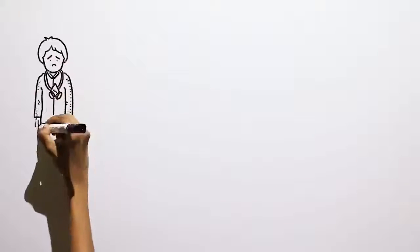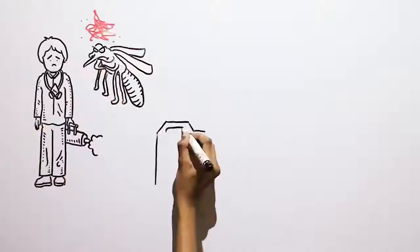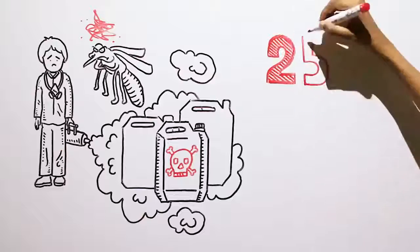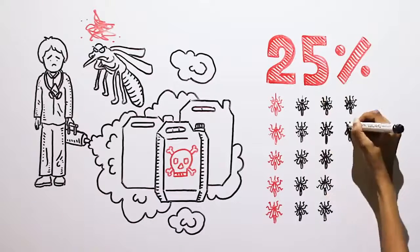Chemical fogging has been done so much in the Maldives over the past decades that mosquitoes have built up an extraordinary level of resistance to the chemicals used. In fact, most insecticides kill less than 25% of the exposed mosquitoes.